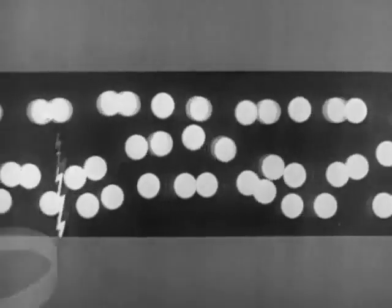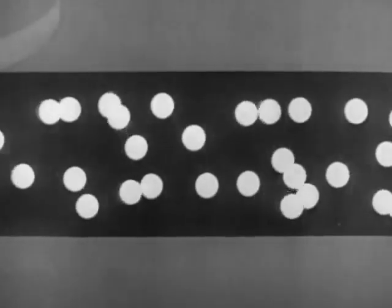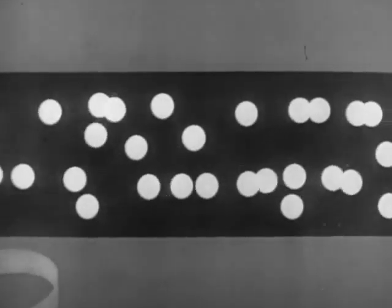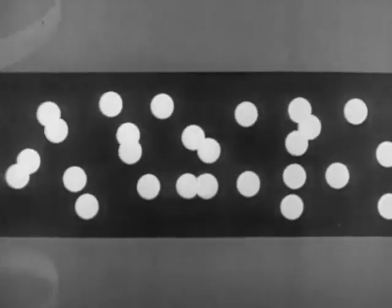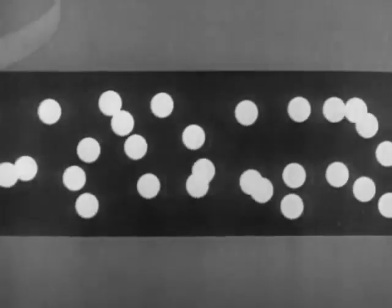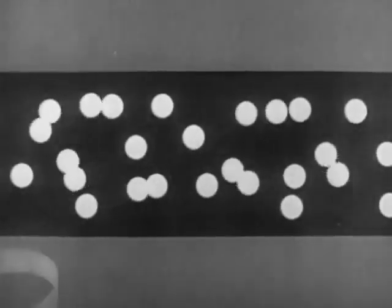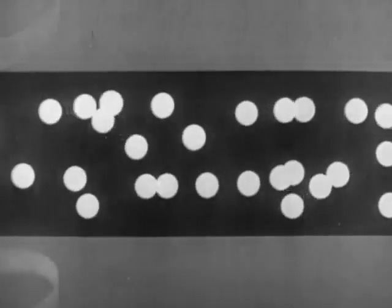When the magnetic field sweeps down across the wire, electrons move in one direction. When the magnetic field sweeps up across the wire, the electrons move in the opposite direction. This movement of electrons in either direction constitutes an electric current flow.